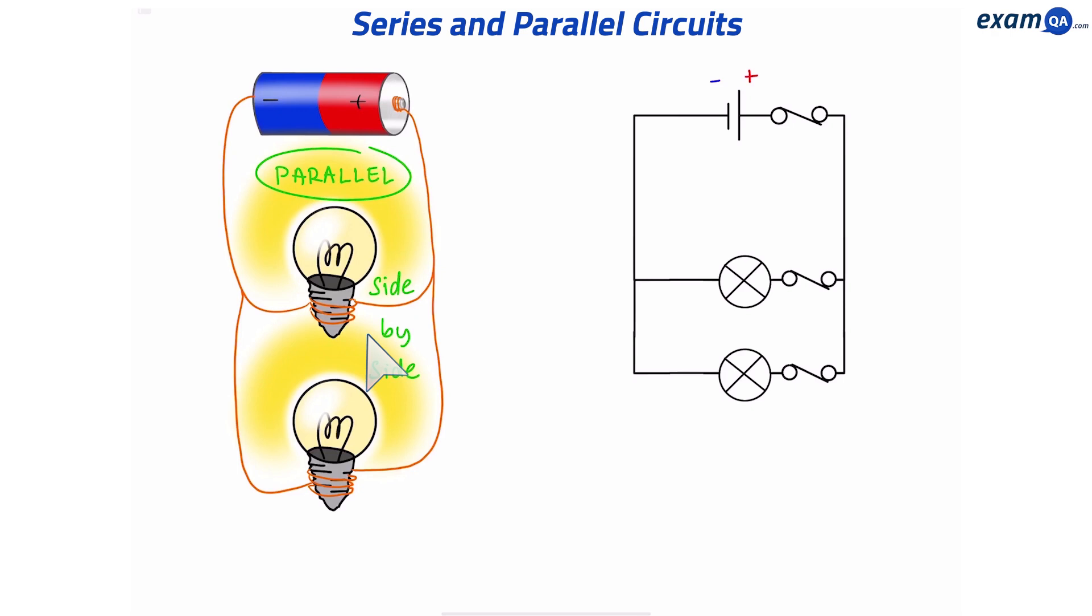Parallel circuits are useful if you have many light bulbs connected together. If one of them breaks, the rest of them can still work. However, if they were connected in series, one breaks and they all turn off.